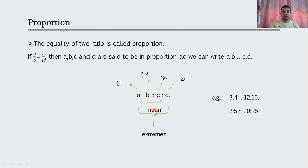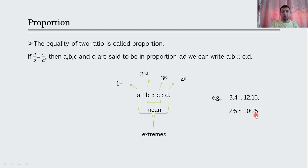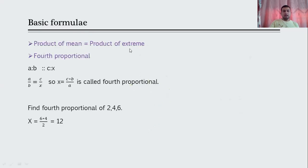The first and fourth terms are called extreme terms. For example, 3:4::12:16 is a proportion since 3 upon 4 equals 12 upon 16. Similarly, 2:5::10:25 is a proportion since 10 upon 25 simplifies to 2 upon 5. Second and third terms are mean terms; first and fourth terms are extreme terms.